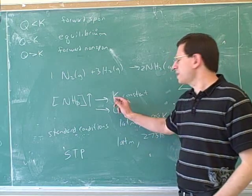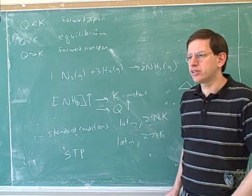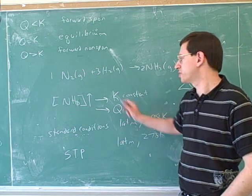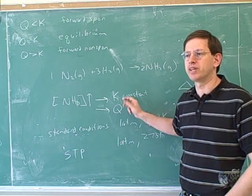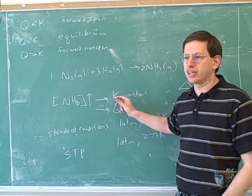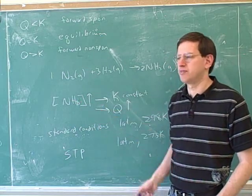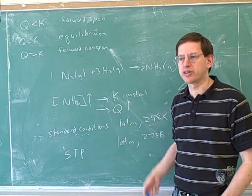So when you look up K in a table, that K is usually described, defined for standard conditions, room temperature, because that's what you would actually be measuring in the lab, because the lab would usually be at room temperature. But if you change the temperature, that can change K. So K is constant with respect to the concentrations, but not with respect to temperature. Changing the temperature can change K.